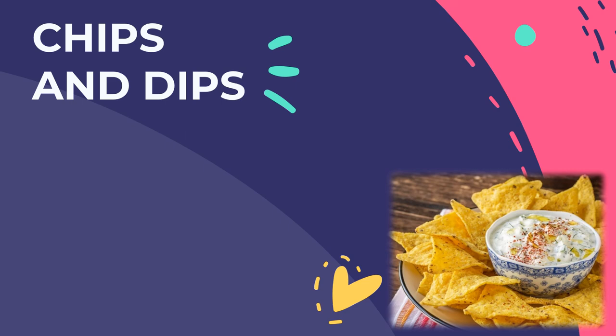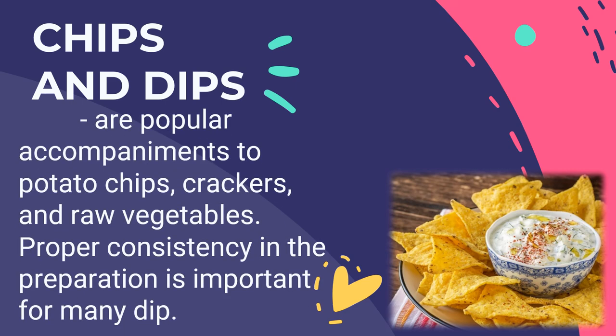Another classification is chips and dips — popular accompaniments to potato chips, crackers, and raw vegetables. Proper consistency is important: the dip must not be so thick that it cannot be scooped up without breaking the chips or crackers, but must be thick enough to stick to the items used as dippers. Chips and dips are a dish consisting of chips or crisps served with dips.